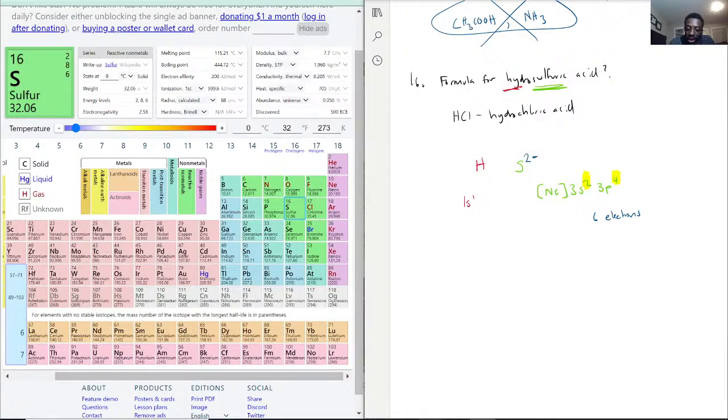And hydrogen is 1 plus, as we discussed with the 1s1, okay. So, with that being said, to balance it out, we need to multiply hydrogen by 2. So, hydrosulfuric acid will end up being H2S. This is hydrosulfuric acid.